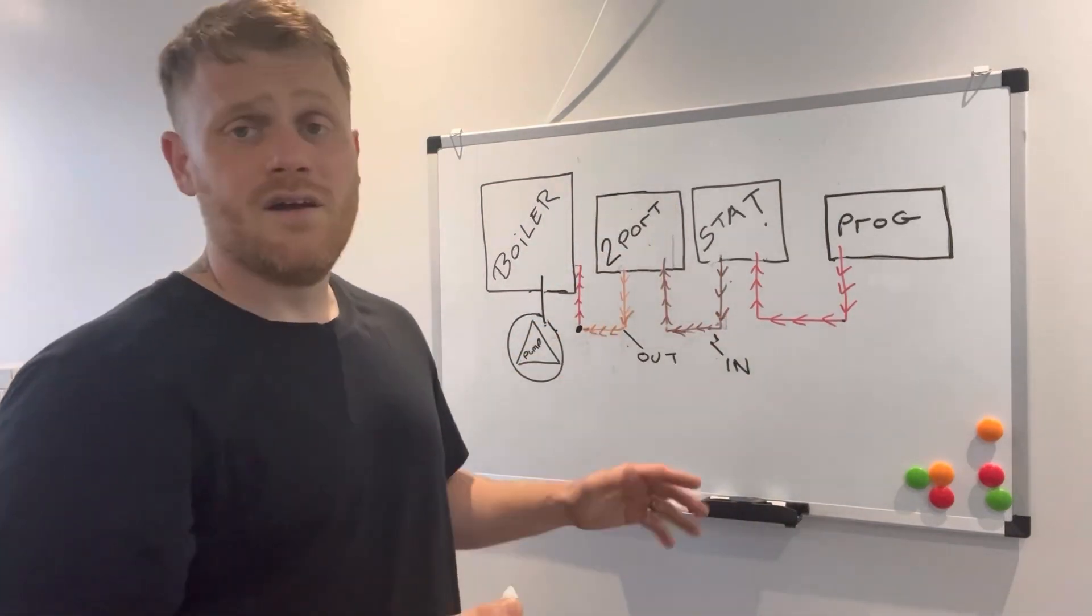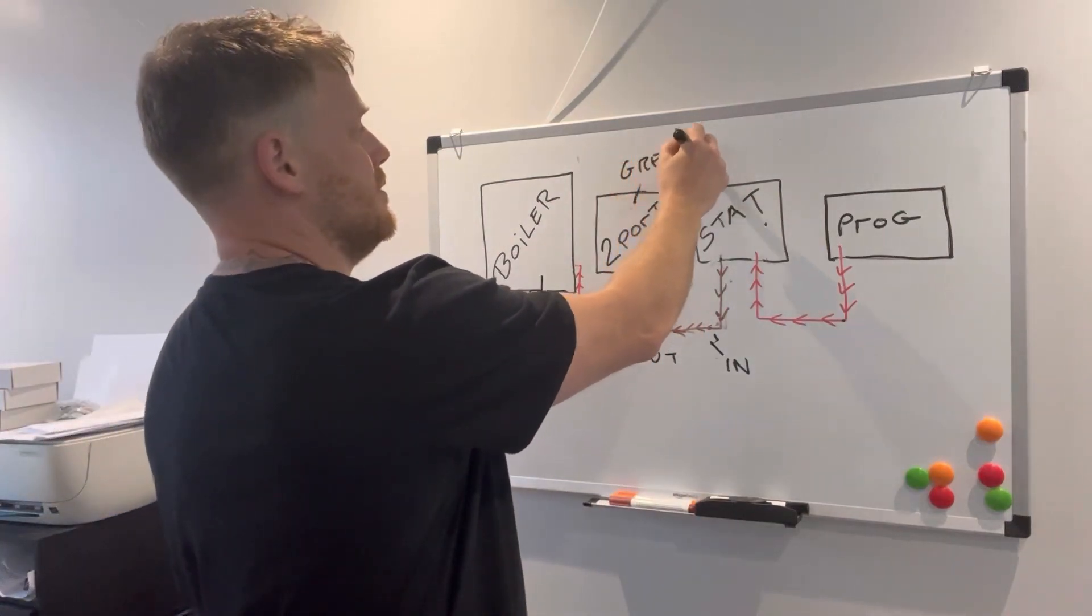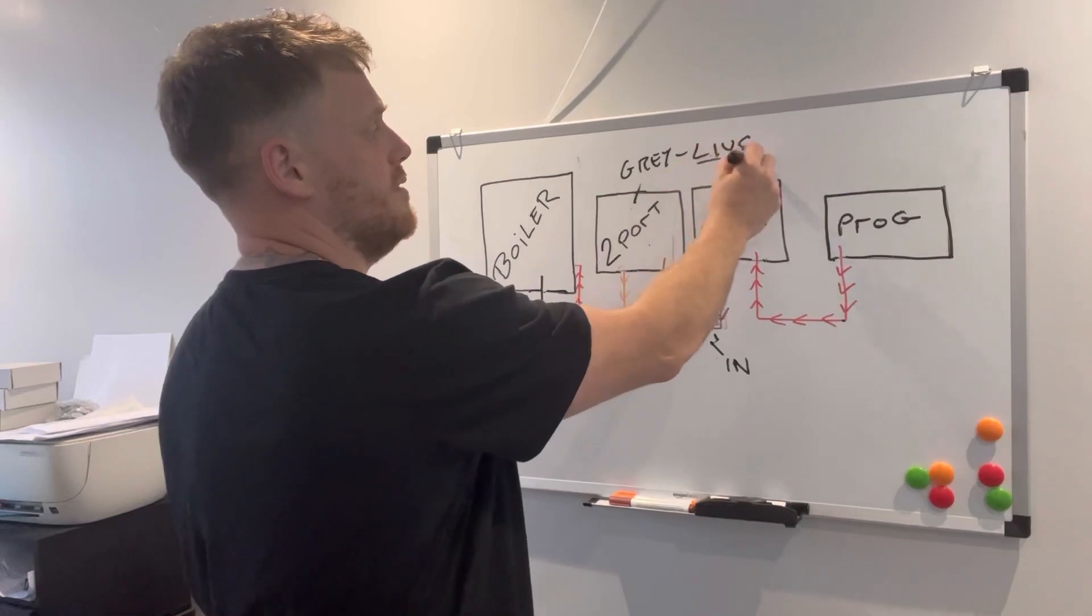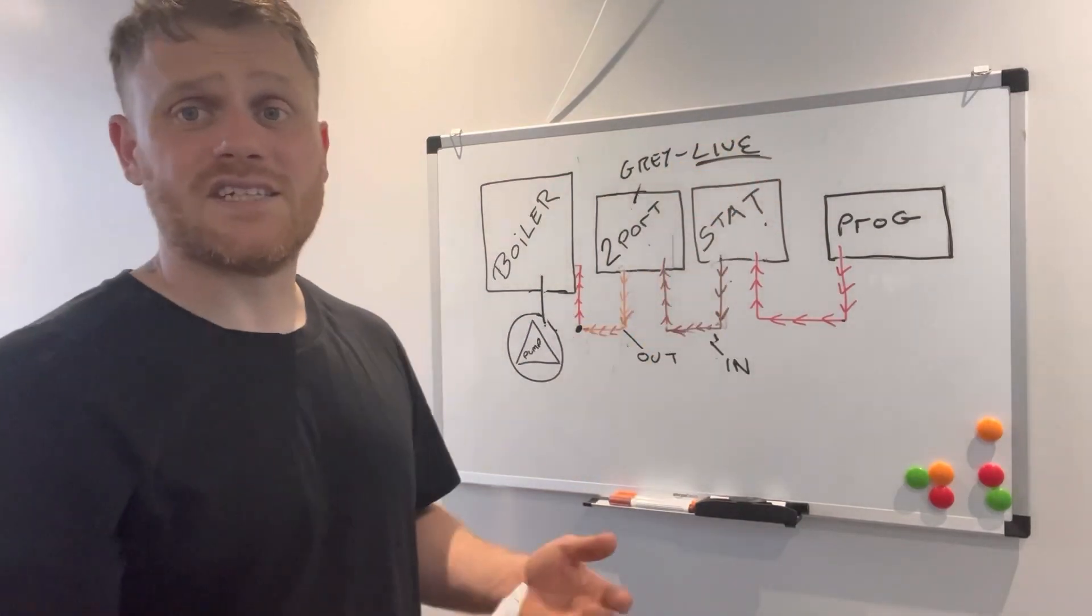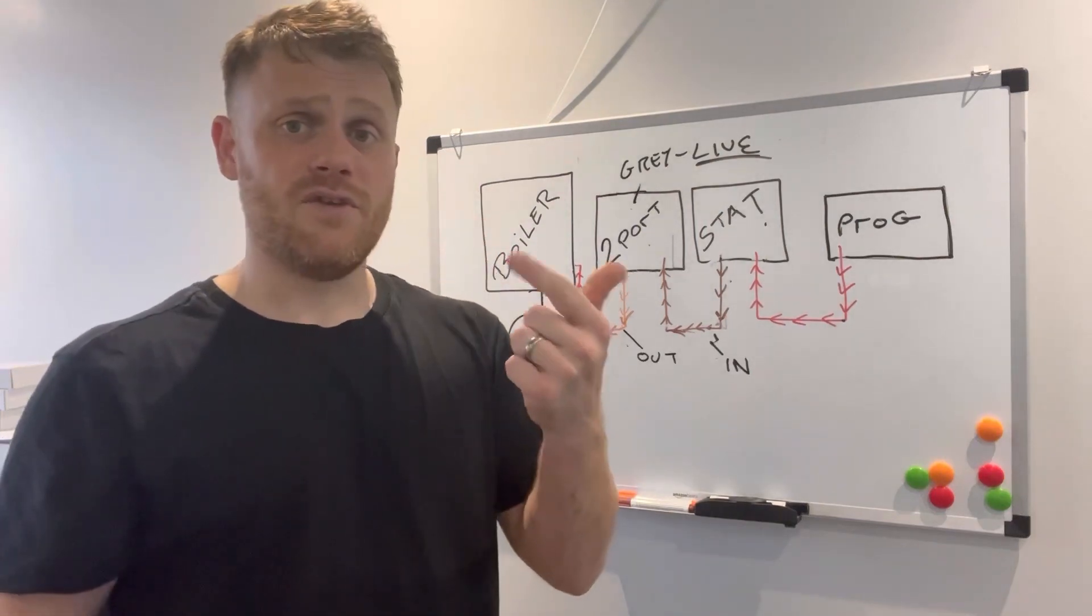The reason I say brown is in is it's your feed in after your programmer and your stat. It's what's going in to your two-port, and the orange is the power coming out. And the other wire which I haven't even mentioned is the gray wire. So the gray wire is the live, that's the live supply to the two-port.